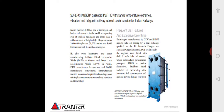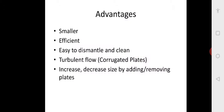These heat exchangers are very efficient, occupy less space, and because they are gasketed with polymer gaskets, they can withstand vibrations in addition to high temperatures. The advantages of plate type heat exchangers are: they are small, compact and efficient; very easy to dismantle; the corrugated plates provide turbulent flow, improving the convective heat transfer coefficient H; and you can increase or decrease the size just by adding or removing plates.